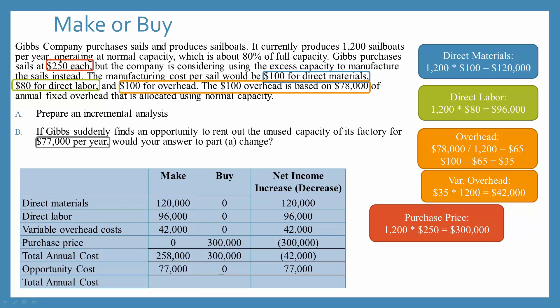And so now when we look at our totals, it tells us that they should choose to buy. Because by buying, it causes an increase in net income of $35,000. So that opportunity cost comes into play and changes our make or buy decision.